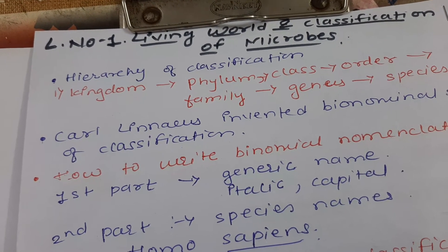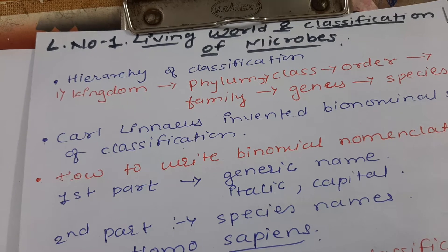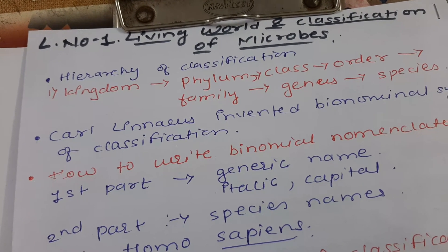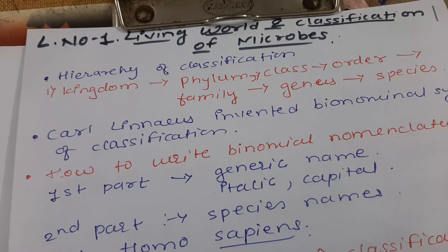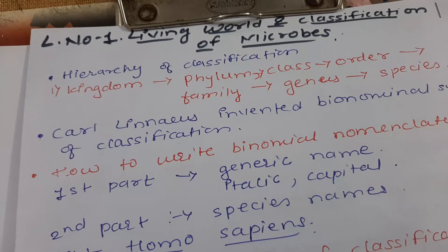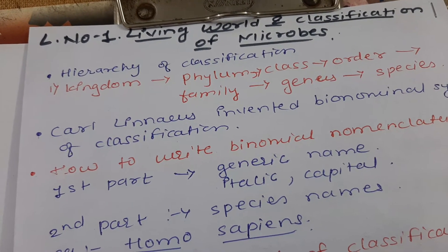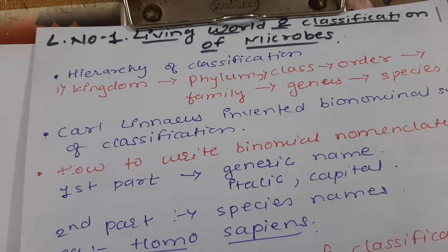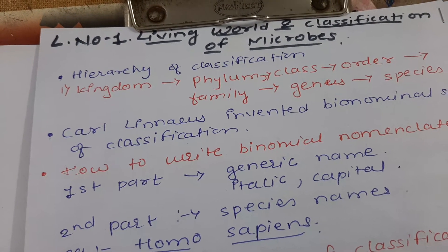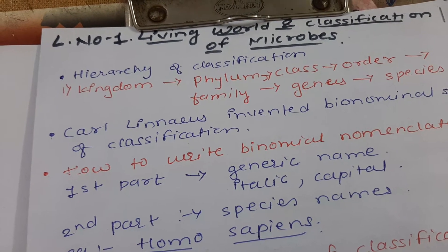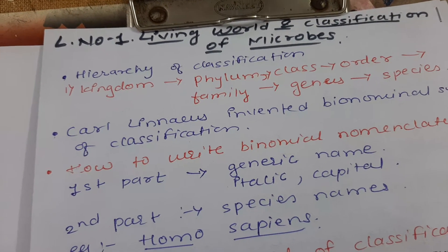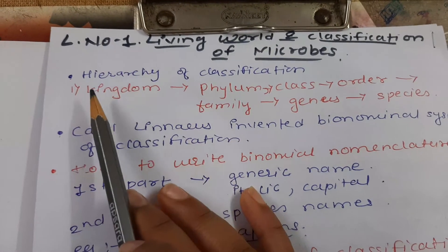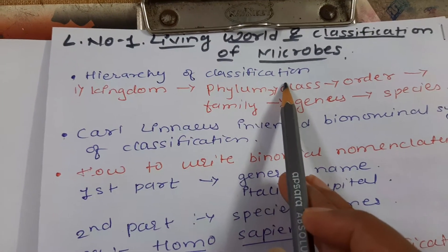According to the 2011 census, around 87 million species of living organisms are found on Earth, including those on land and in the sea. To study such a vast number, it was essential to divide them into groups and subgroups, created by considering the similarities and differences among living organisms.